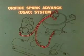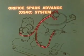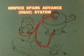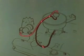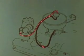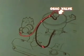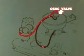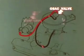The orifice spark advance control or OSAC system delays vacuum timing advance for NOx emission control. A plain black vacuum line leads from the carburetor spark advance port connection to the bottom of the OSAC valve on the air cleaner housing. From the upper valve connection, a red stripe hose leads to the vacuum unit on the ignition distributor.